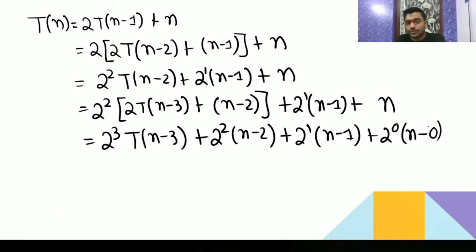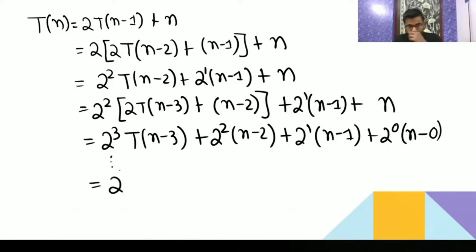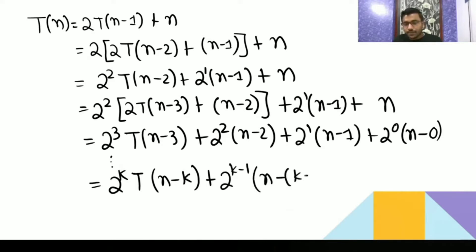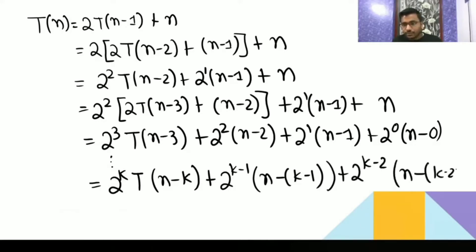So you can see the pattern: whatever is in the power, it is doing n minus that value. It keeps going as 2^k · T(n-k). Here if the power is k, then the corresponding term is n minus k. Then n minus (k-1), then n minus (k-2), all the way down to 2¹·(n-1) and 2⁰·n.